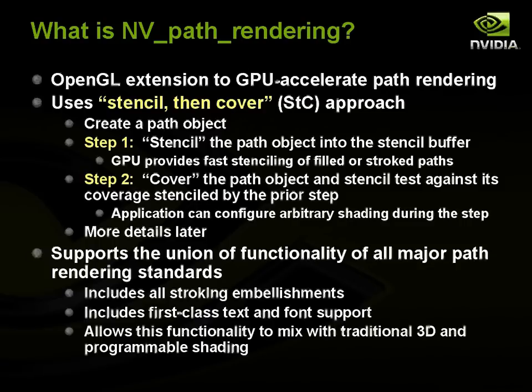The support designed into NV path rendering covers the union of functionality of all major path rendering standards, with the idea that NV path rendering can serve as a basis on which other APIs can be built. It includes all stroking embellishments such as dashing, join styles, and end caps. There's first-class support for text and fonts, which is a really important aspect of path rendering. It also allows mixing path rendering with traditional 3D and programmable shading, so path rendering is on par with 3D rendering inside your OpenGL application.